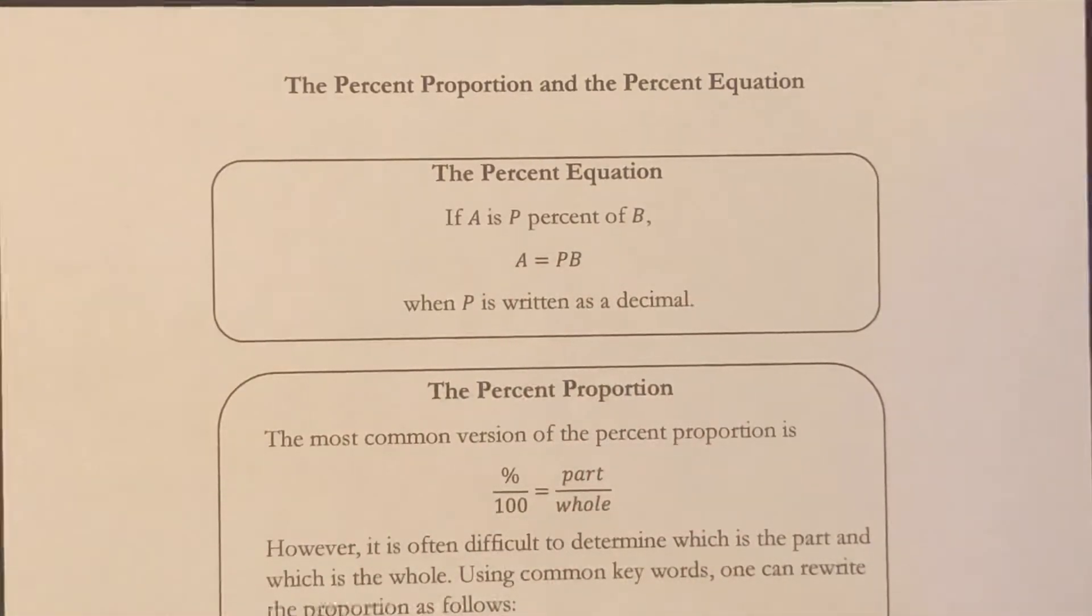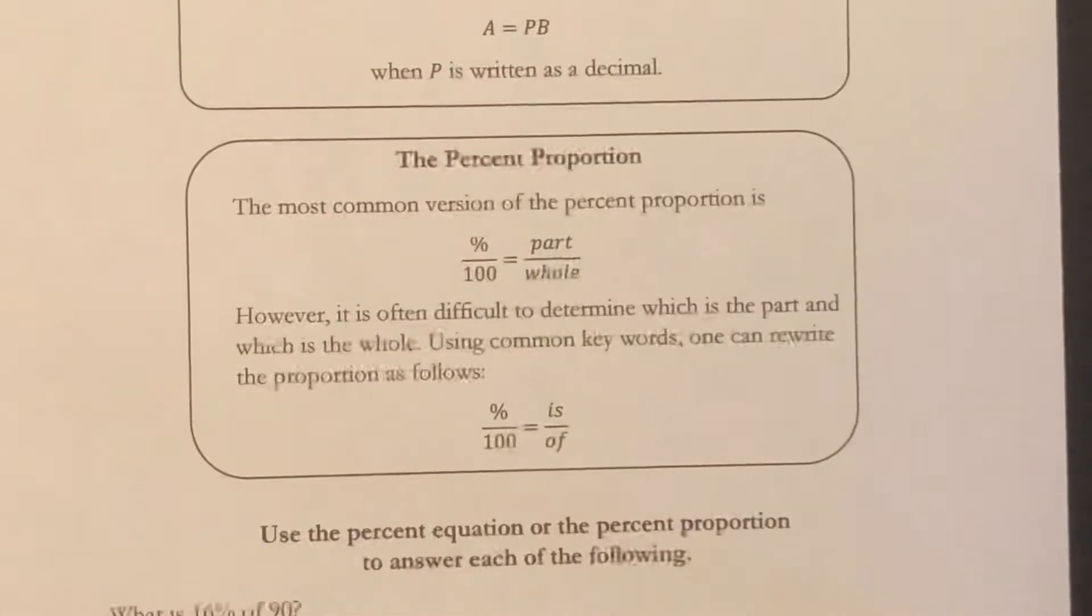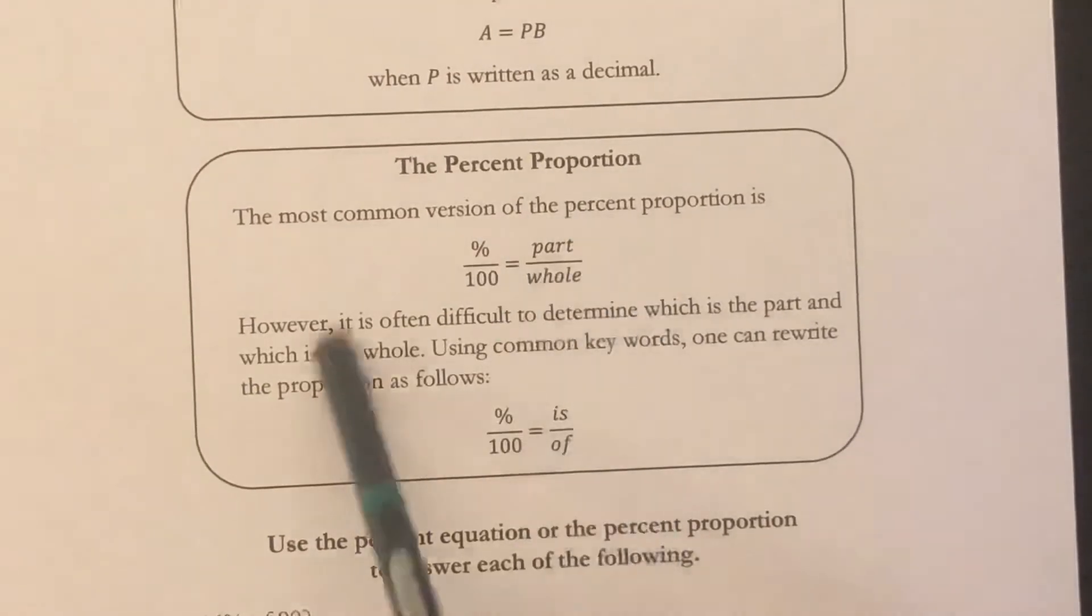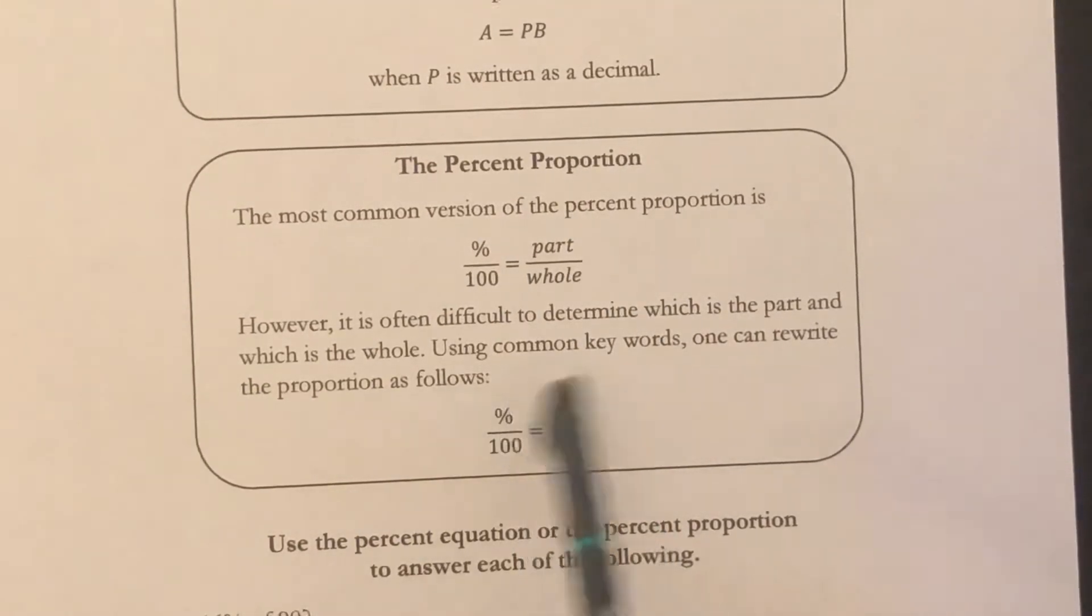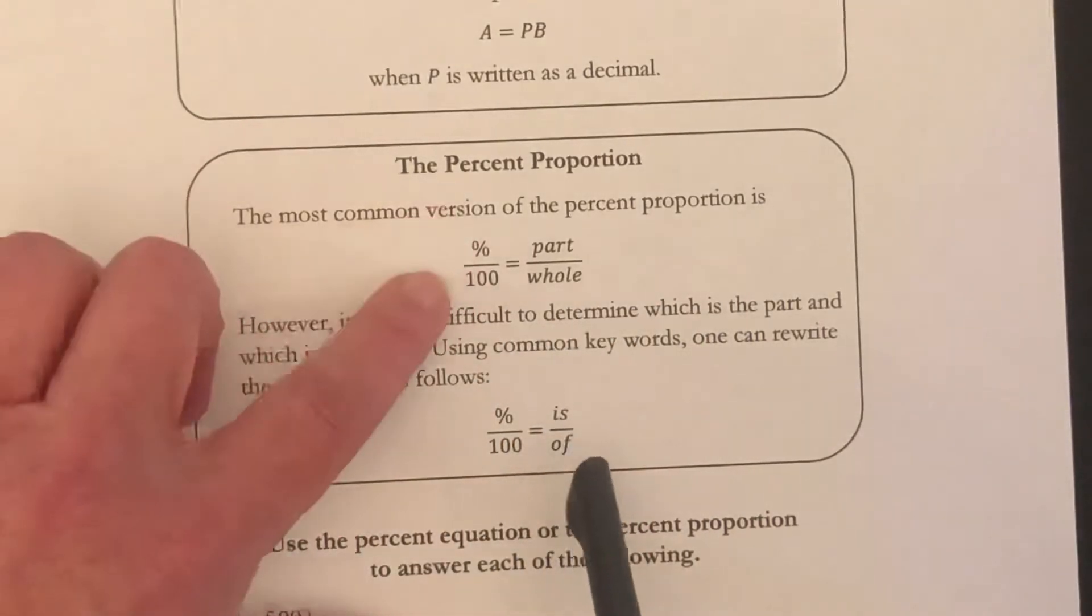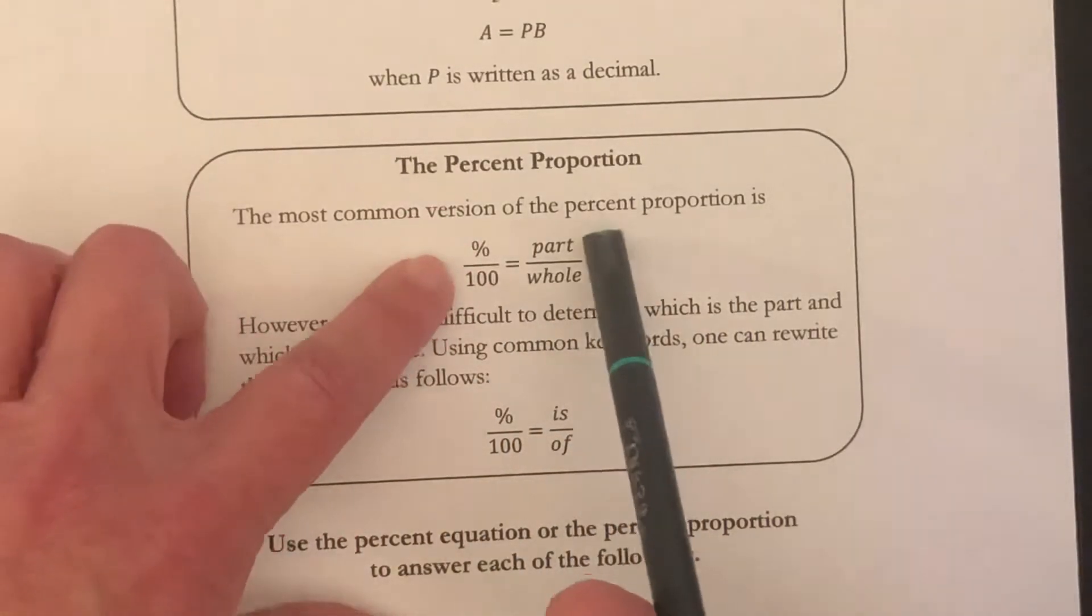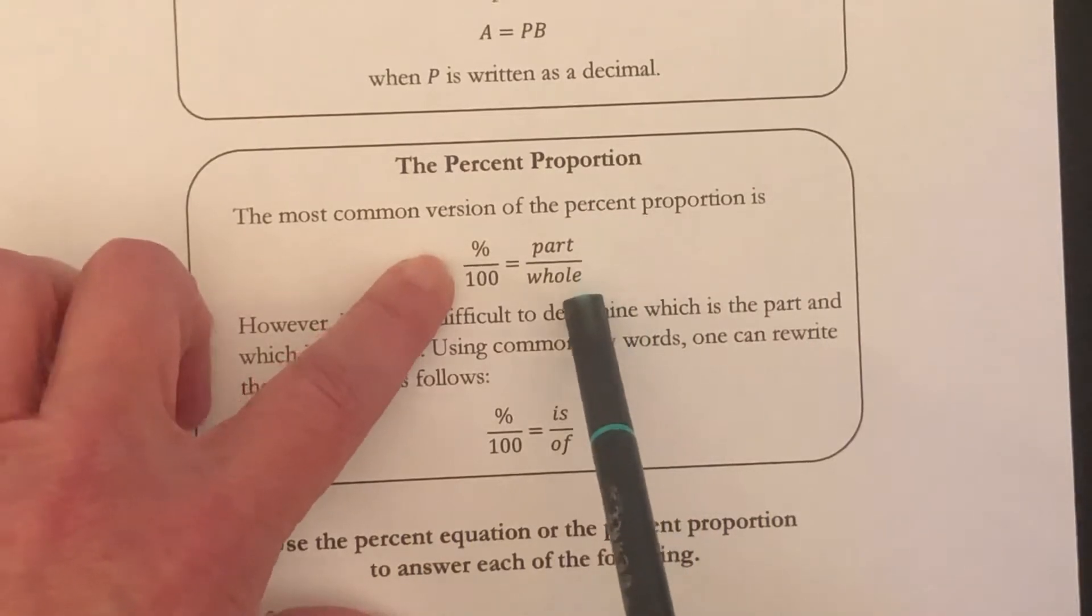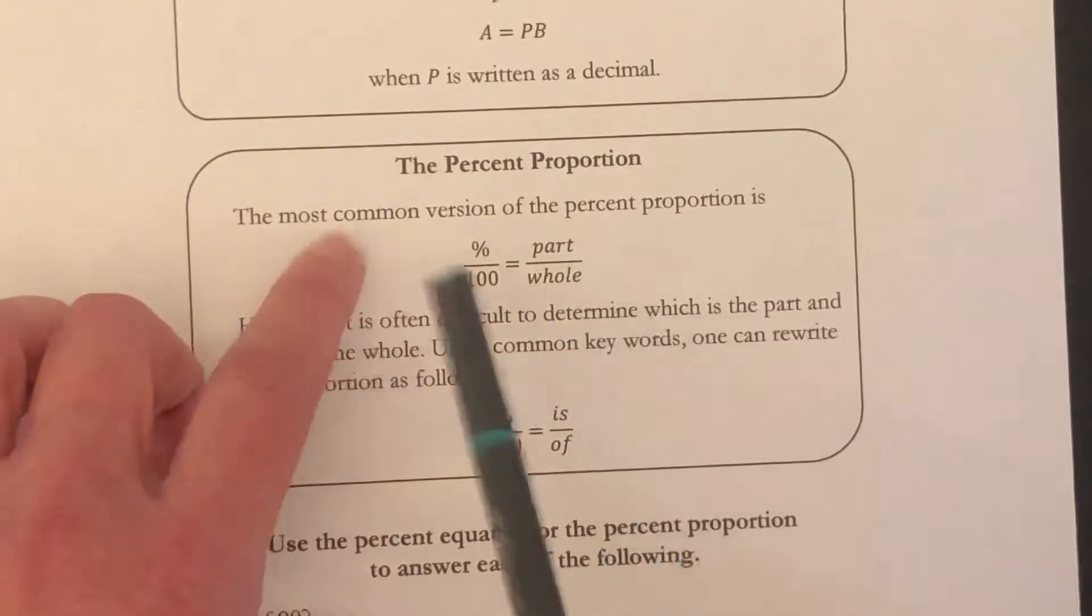Another way of solving these is to use the percent proportion, and honestly I find that most people like this better, but you're most likely to see it written like this: the percent over 100 equals the part over the whole. You fill in the pieces you have, you cross multiply and solve.